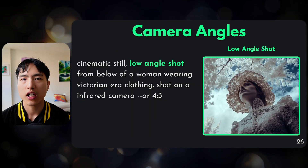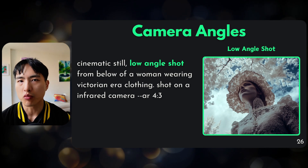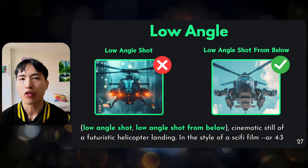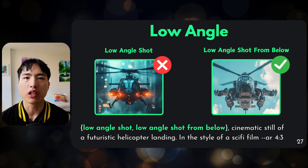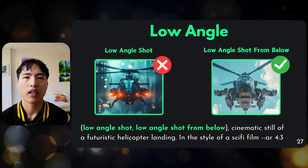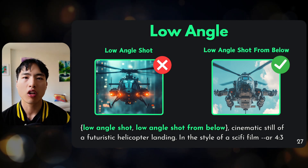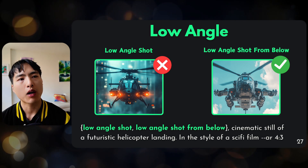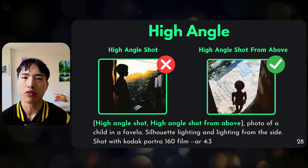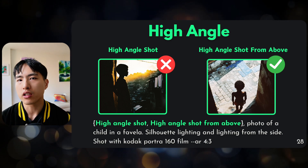The opposite is a low angle shot, where you're below the subject and tilting the camera upwards — this makes the subject look bigger, stronger, more powerful, like they're in charge. One key tip: for high angle and low angle shots, you want to specify that you're above or below the subject. For example, 'low angle shot' alone sometimes doesn't work — the helicopter example just showed a straight-on view — but 'low angle shot from below' tells Midjourney we need to be below pointing upwards. The same principle applies for high angle shots from above.